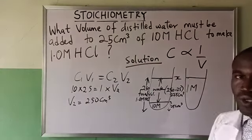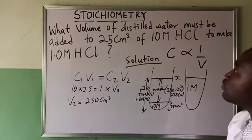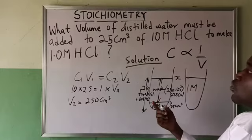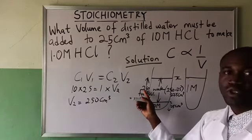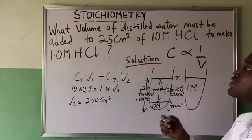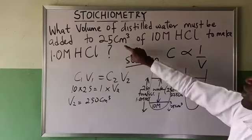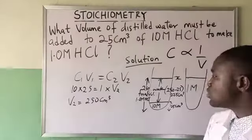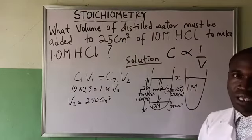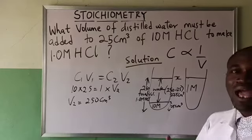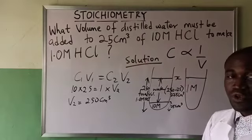Do we get it? So that means if they ask you what is the final volume you will get when you dilute this to 1.0 HCl, tell them that the final volume will be 250 cm³. But when they say what is the volume of water that will be added for you to dilute this higher concentrated to 1.0, it's 250 minus the volume of that higher concentrated, that is 225 cm³.